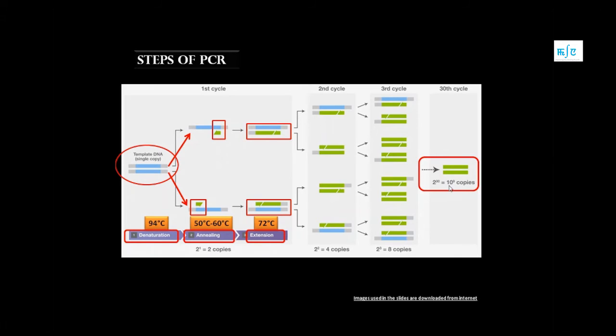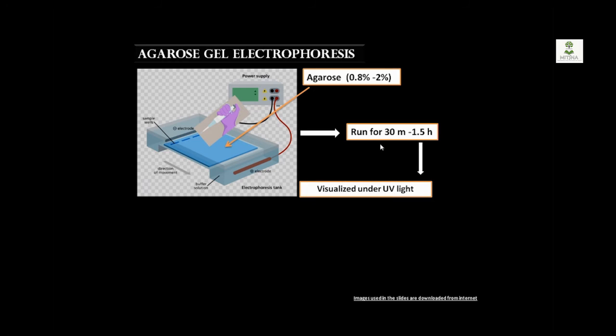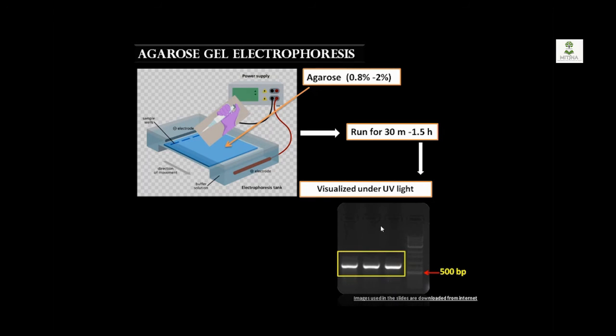So this is a typical agarose gel electrophoresis unit. Here this is the agarose gel and we have to load our sample, which is the PCR amplified product, into these wells. And this gel should run under an electric field. Since the DNA is negatively charged, when it is subjected under an electric field they will try to move towards the positive end of the gel. So after running for about 30 minutes to one and a half hours, it can be visualized under a UV light.